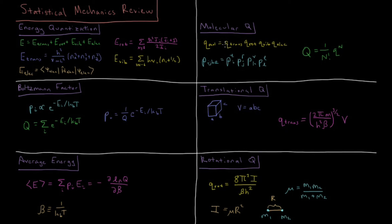Looking at the translational partition function in more detail: where the volume of the box is equal to a times b times c (the sides of the box), the translational partition function is two pi times the mass of the particle divided by Planck's constant squared times beta, that quantity to the power of three-halves, times the volume it has to translate within.